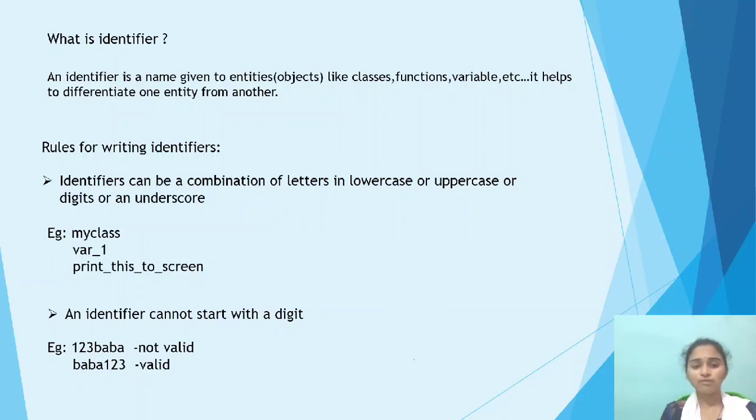Next one is an identifier cannot start with a digit. Example, 123baba. It is not valid. Next one, baba123 is valid.